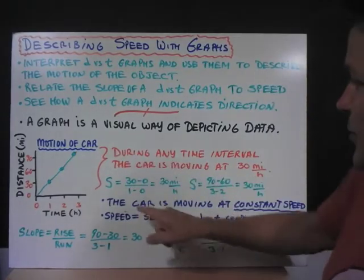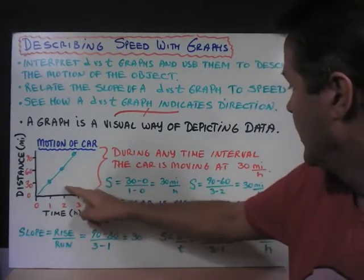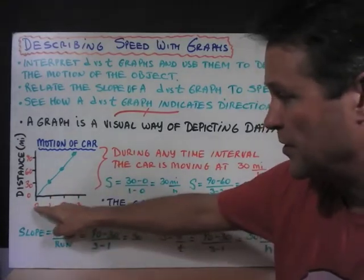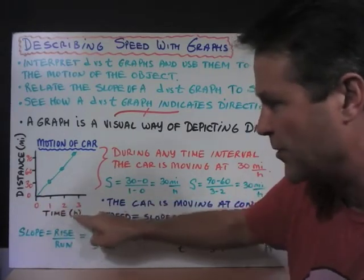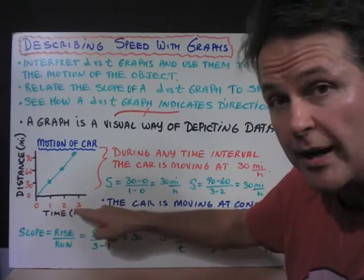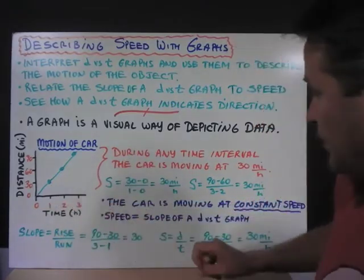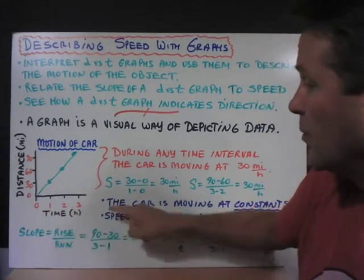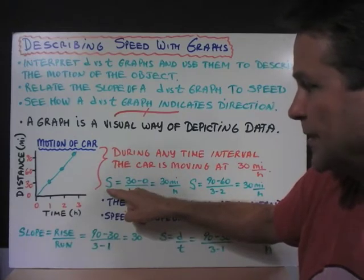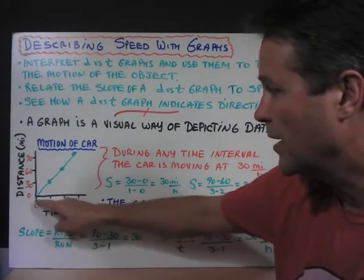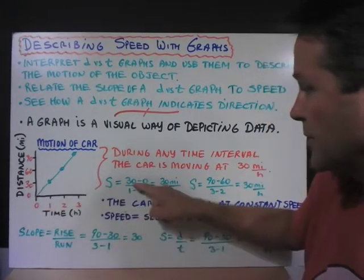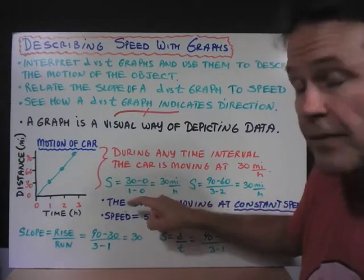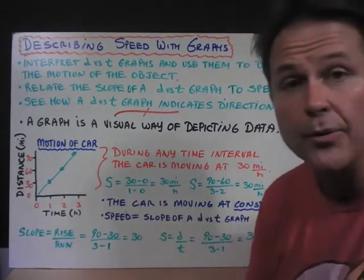Now during any time interval, we see that the car is moving at 30 miles per hour. Now how do we know this? A time interval would be between 0 and 1 hours, between 1 and 2 hours, and between 2 and 3 hours. So if we consider the time interval between 0 and 1 hours, we can calculate the speed of that time interval. Between 0 and 1, the car goes from 0 to 30 miles. So the change in distance divided by the change in time would be 30 minus 0, divided by 1 minus 0, which works out to 30 miles per hour.